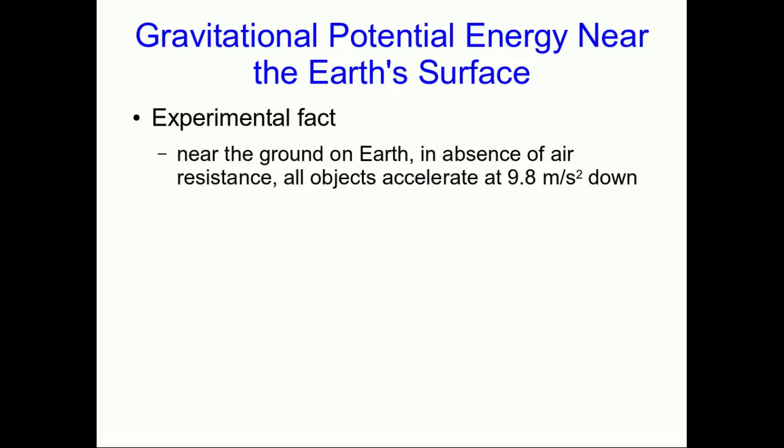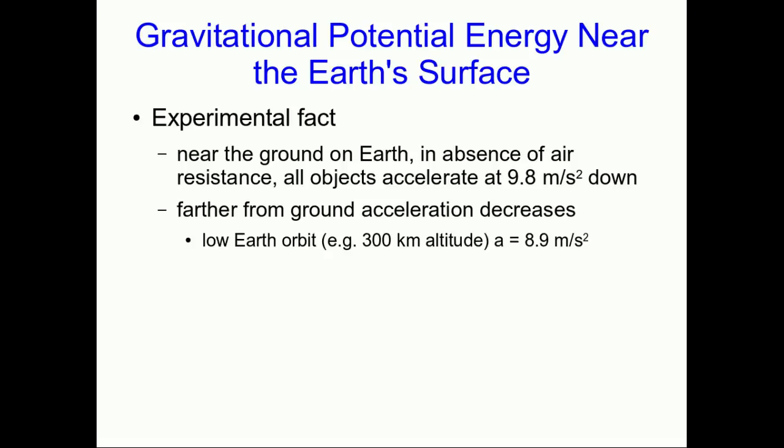Here are some experimental facts, some of which you already know. On Earth, near the ground, as long as we can ignore air resistance, all objects accelerate at about 9.8 meters per second squared down. You might not realize, though, that the farther from the ground you get, the lower that acceleration is. So that, for example, 300 kilometers up, it's about 8.9 meters per second squared, and out in geosynchronous orbit, it's down to 0.22 meters per second squared.